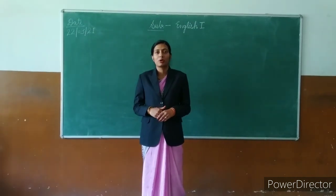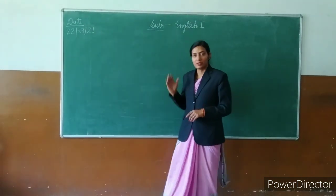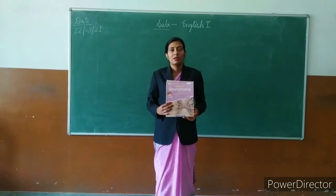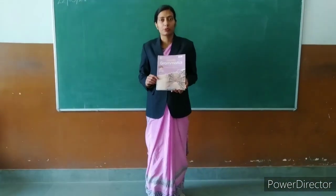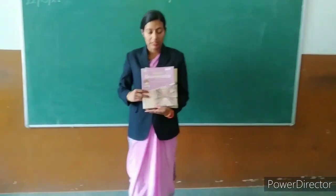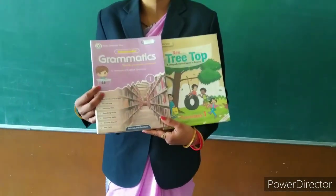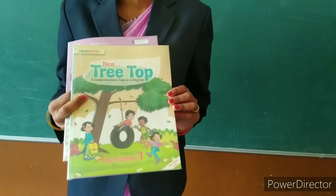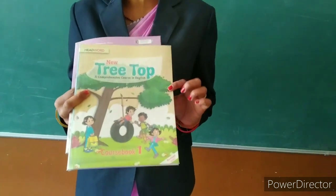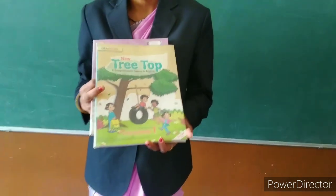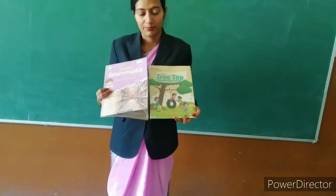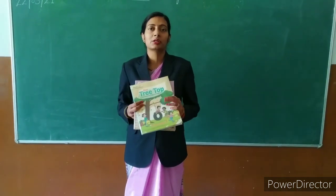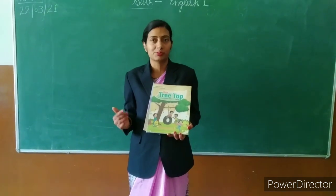Today in this class we are going to learn. First of all I am showing you the books. In our English subject there are two books. First one is English first, and the name of that book is Grammatics. Second one is Treetop — that is called English second, and the name of this book is Treetop. There is one more book called English conversation, and this is your oral subject.